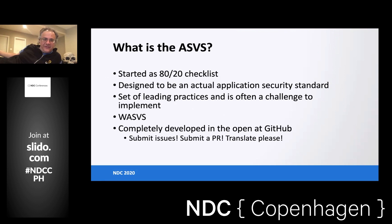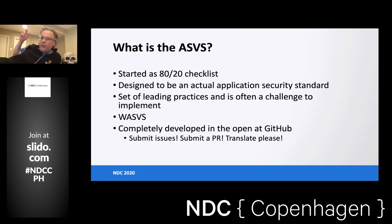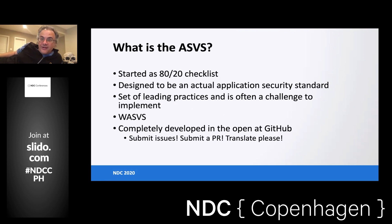ASVS stands for the Application Security Verification Standard. This is a documentation project from the OWASP Open Source Nonprofit Foundation. When this project first started, it was a basic checklist of some of the top things you can do in terms of requirements for secure development. It was not really meant to be a standard — just a bunch of leading practices. The 4.0 version was done in GitHub, and we took open comments from the world to triage, clarify, and fix the requirement list. It was done out in the open where community comments were welcomed.